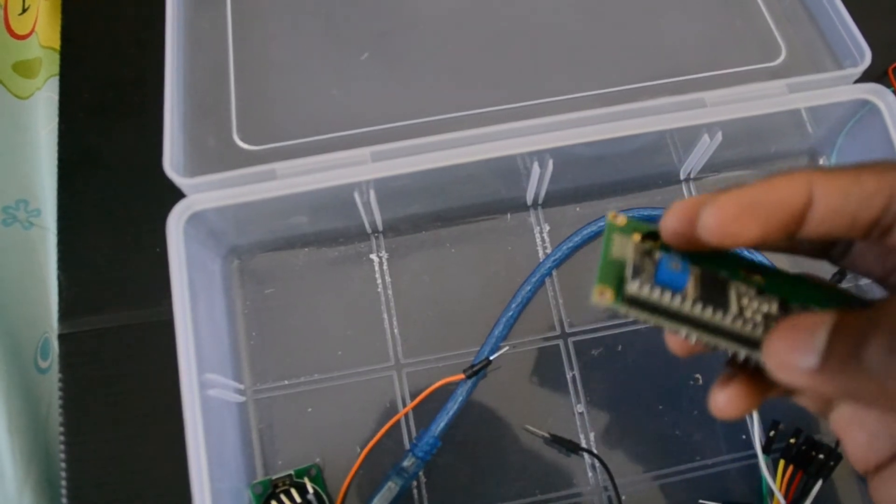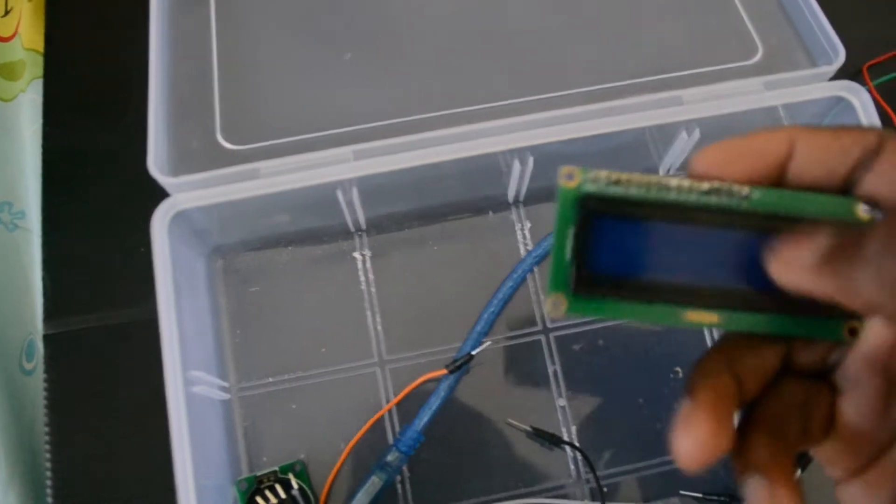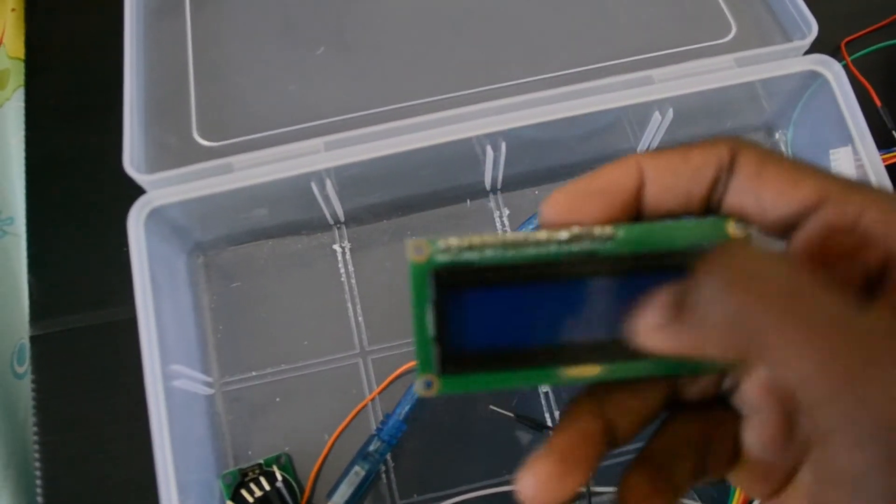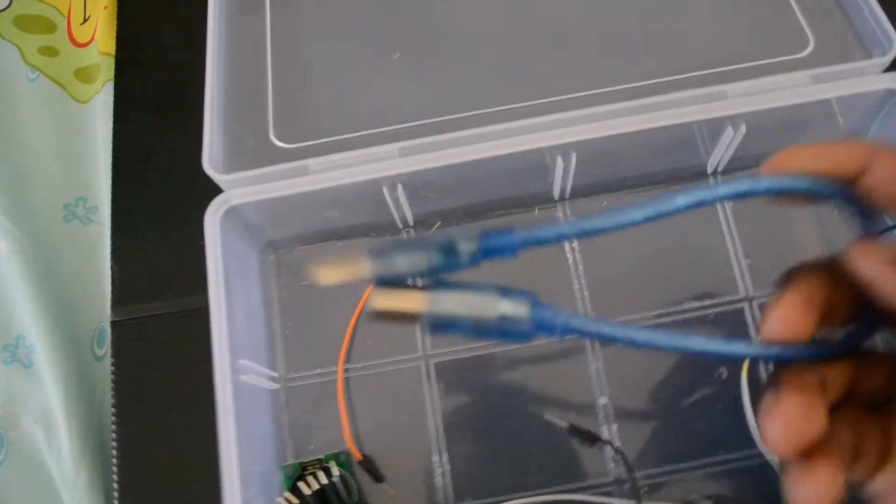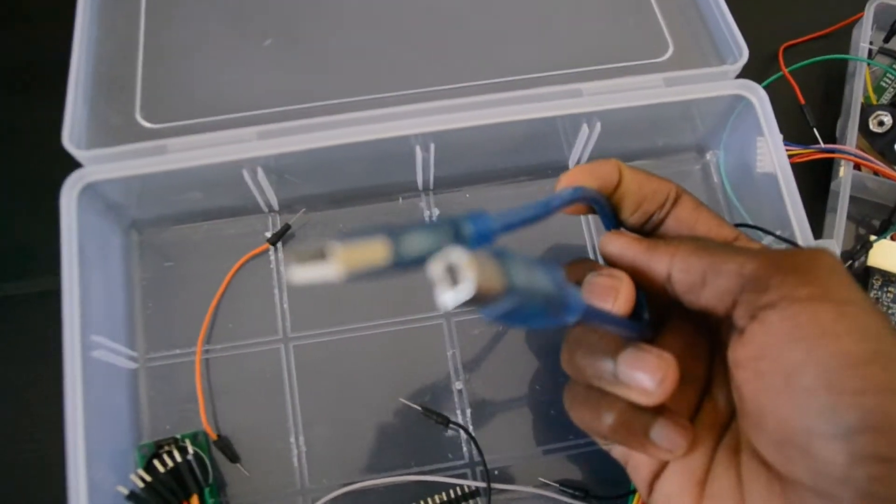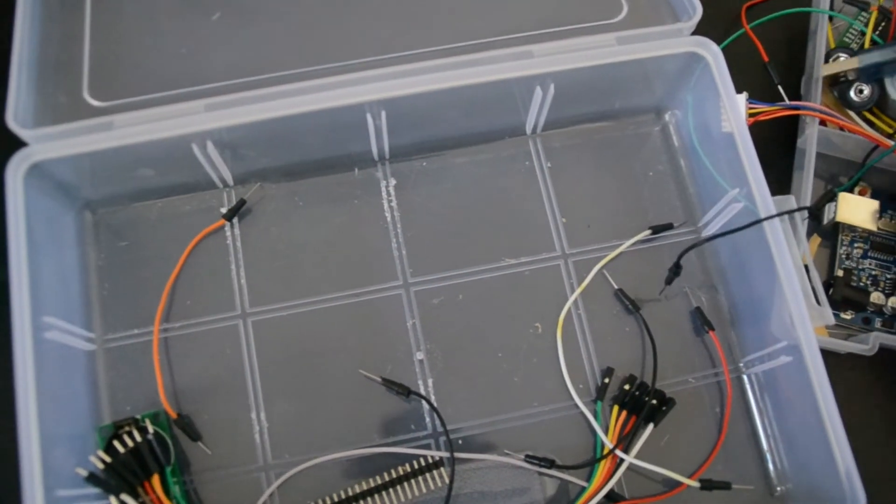When I power it, it appears squares here, just squares. I have this USB cable that I'm using to program my Arduino boards.